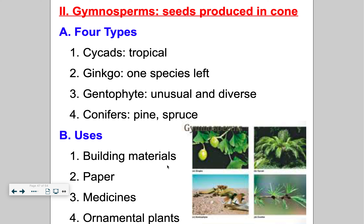We use gymnosperms in a variety of different ways. The big one is building materials — the price of which, if you hadn't known, has skyrocketed. We use gymnosperms in the processing of paper. We use gnetophytes and some cycads for medicinal purposes and pharmaceutical drugs. In fact, ephedra, a medicine found in Sudafed, is a gnetophyte. And then finally, ornamental plants, landscaping, and decor all fit under there — so lots of uses for gymnosperms.